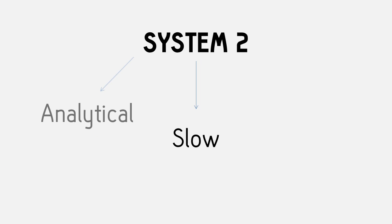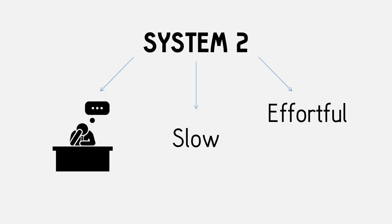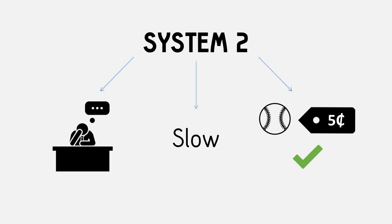On the other hand, System 2 thinking is slow, analytical, and more effortful. This is the one that kicks in when you concentrate on a problem, and the one that said 5 cents to the bat and ball problem.